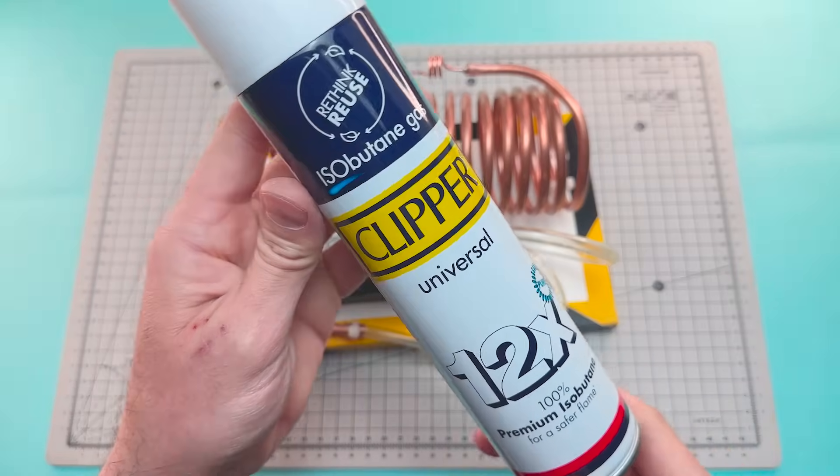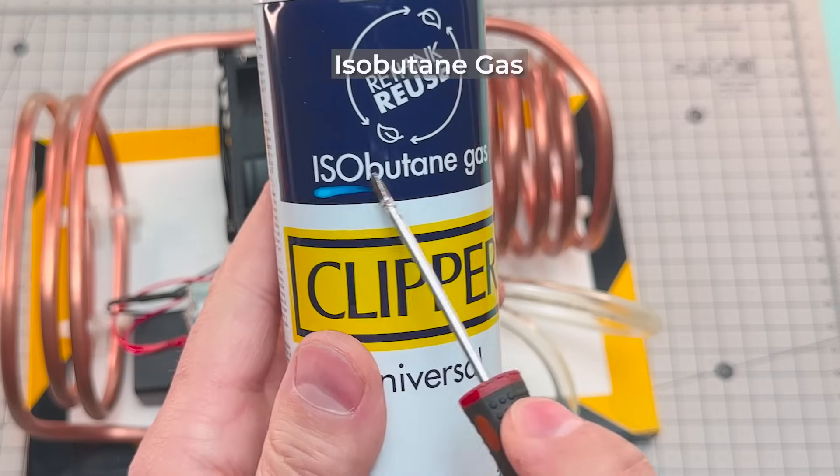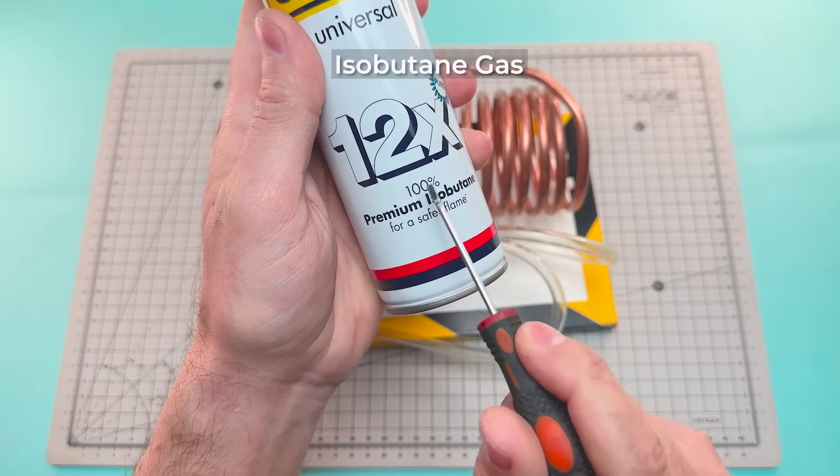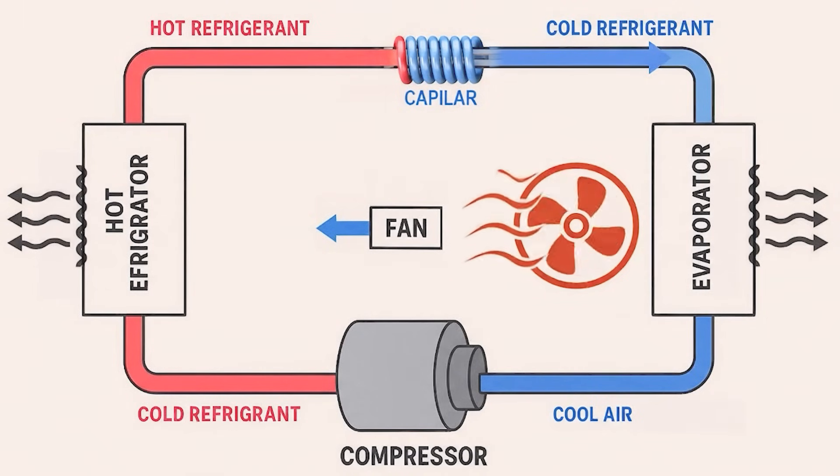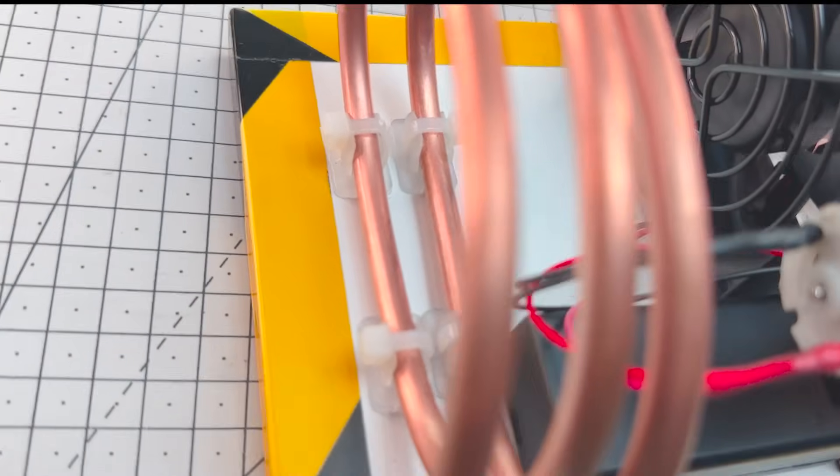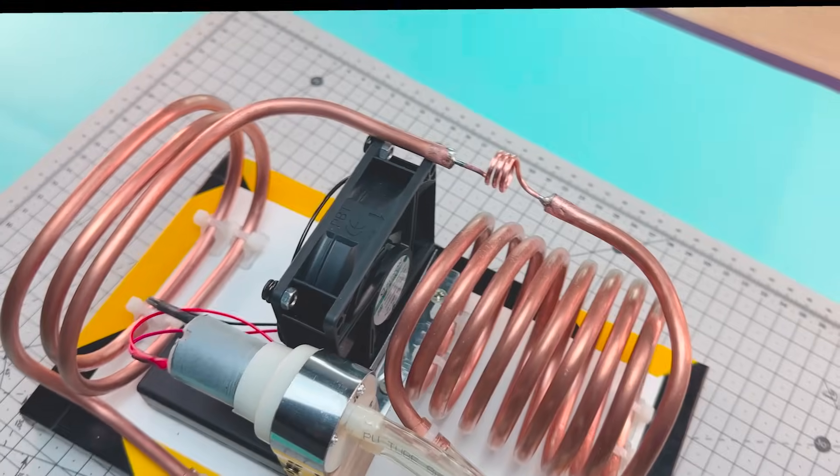Now we're going to charge our circuit with isobutane. The heart of the system is the refrigeration cycle, and although it might seem complex, it's actually based on a simple physical principle, using a gas that, when evaporating, absorbs heat from the environment. That gas is isobutane, and it's going to be our ally in turning hot air into cold air.